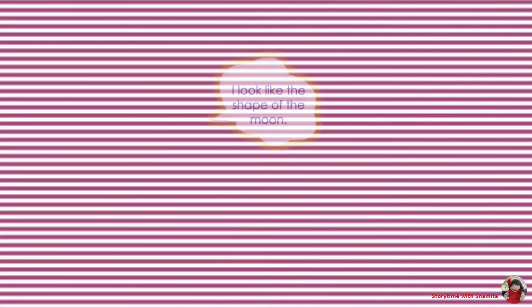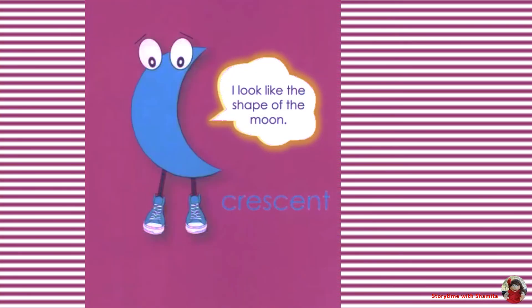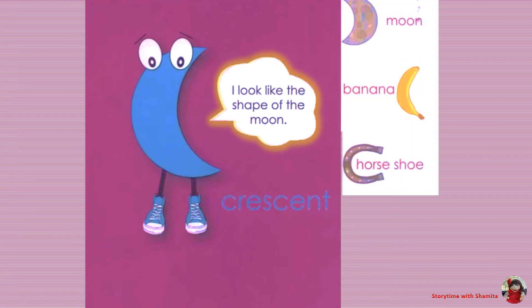I look like the shape of the moon. Crescent. Examples: moon, banana, hoshu, kusan.